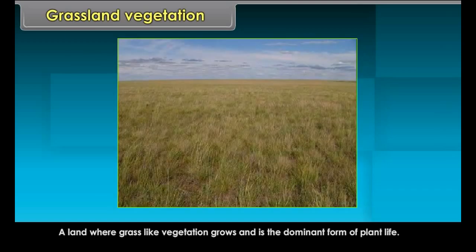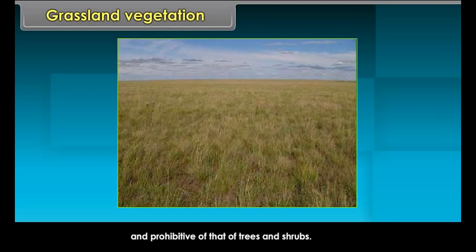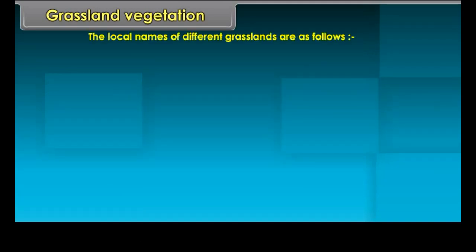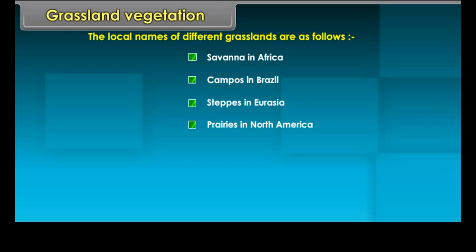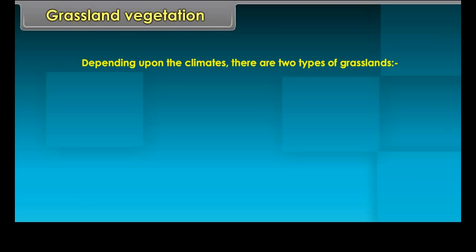Grassland Vegetation. A land where grass-like vegetation grows and is the dominant form of plant life. Moderately dry climatic conditions and seasonal disturbances such as floods or fires are generally conducive to the growth of grasses and prohibitive of trees and shrubs. Depending upon the climates, there are two types of grasslands: tropical grasslands and temperate grasslands.